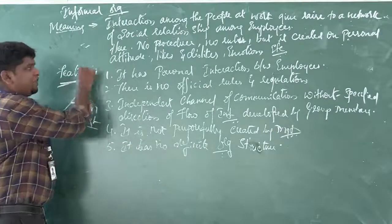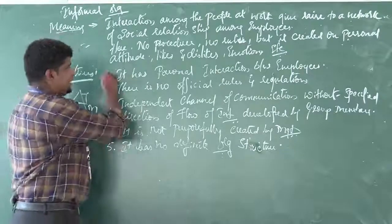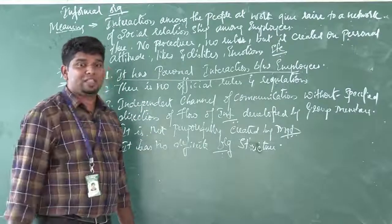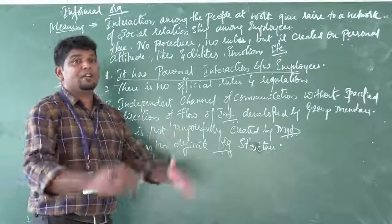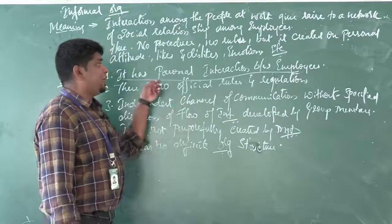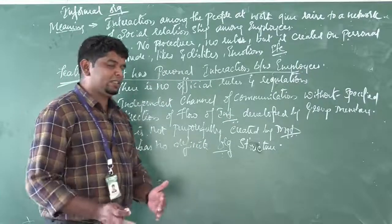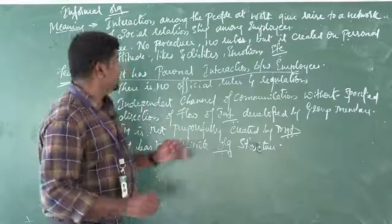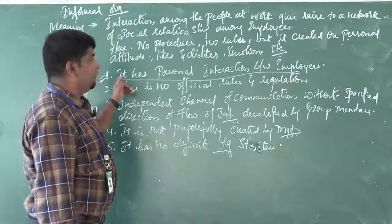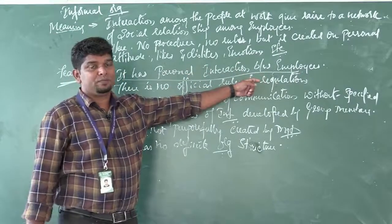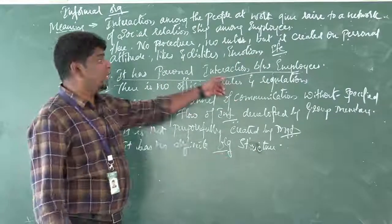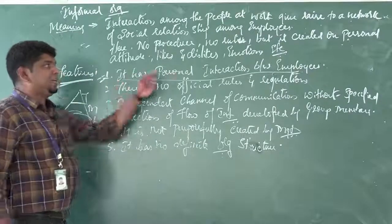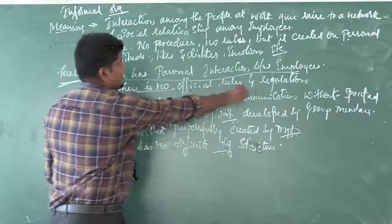Now the features of informal organization. First feature: it is a personal interaction between the employees. For example, like a group discussion in companies — employees sit together and decide 'we will do it like this.' Personal interaction between employees drives the work forward, and the top level management does not interfere in their interaction or decision making.